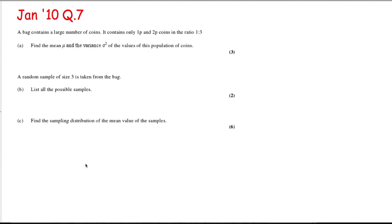This is from January 2010 question 7. We're told that a bag contains a large number of coins, only ones and twos, in the ratio of 1 to 3. We're asked to find the mean and the variance of the values in this population of coins. We have to remember that if I'm picking out only ones and twos, we're dealing with a discrete random variable, so you'll need a bit from the S1 course here.